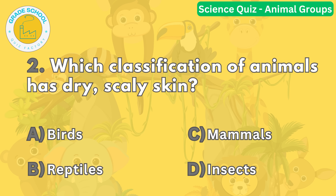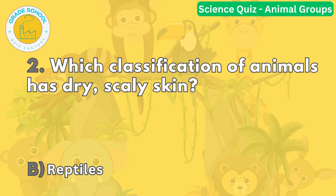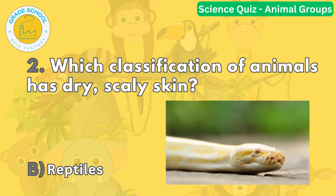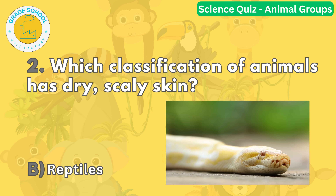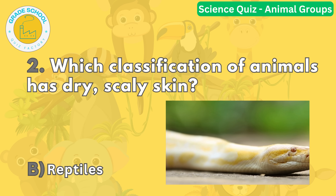Question number two. Which classification of animals has dry, scaly skin? The correct answer is letter B. Reptiles, like snakes and turtles, have dry, scaly skin that helps protect them from the environment. They are cold-blooded animals.